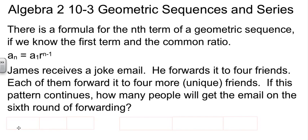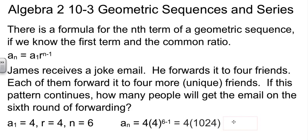There's information hiding in here. We know the first term is four because he sent it to four friends. We know r is four because each one of those people is sending it to four friends. And we know n is six because we're doing six rounds. So now let's just plug the values in. Do a little arithmetic and we find out that after six rounds of forwarding, in that round there's going to be 4,096 people that have gotten the joke.